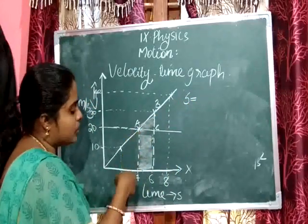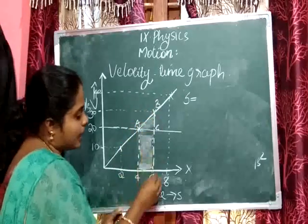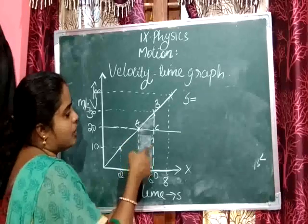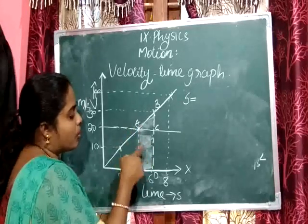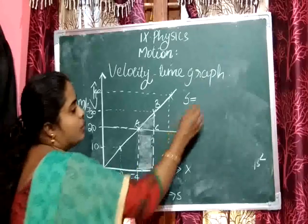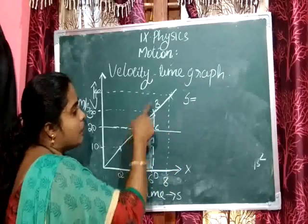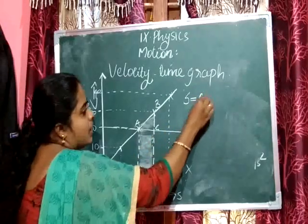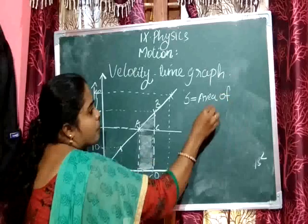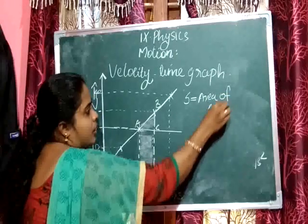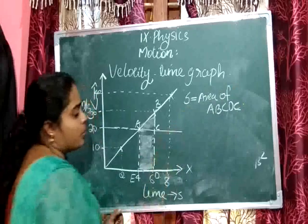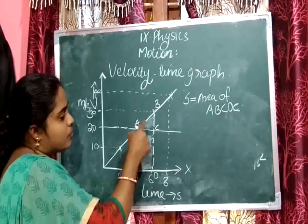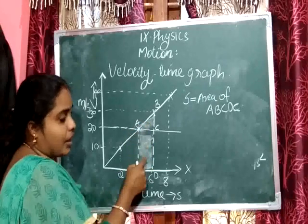We give names to the points: A, B, C, D, and E. The distance travelled by the object during this time interval is given by the area of shape ABCDE. Looking at this figure, it consists of a triangle and a rectangle. So we split the area as: area of triangle ABC plus area of rectangle ACDE.